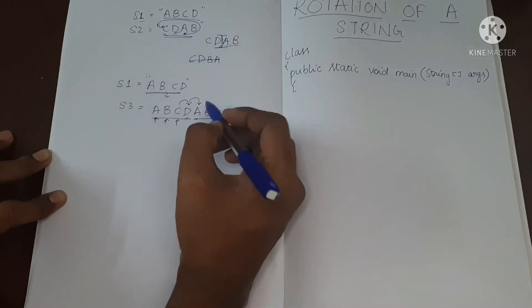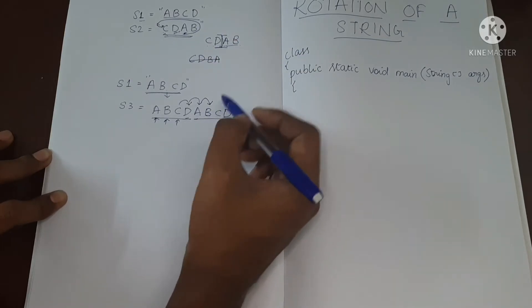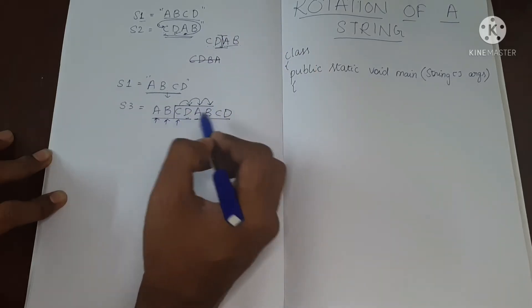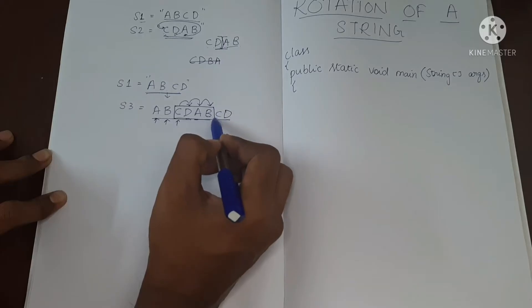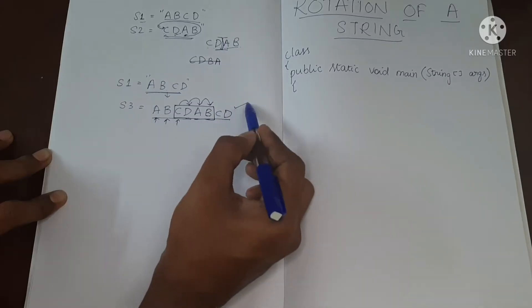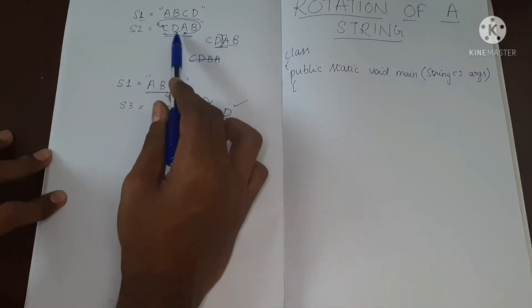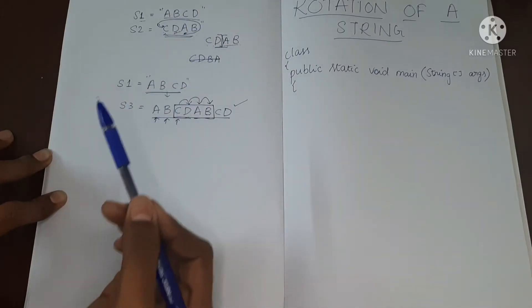Again, it's a match. We go to the next element. We have B, and we have B over here. So the S2 is found in this string. So this basically means that S2 is the rotation of S1.